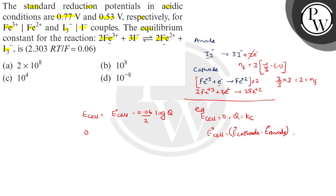So this is the SRP value. For the cathode Fe³⁺ reaction, it's 0.77 minus the anode value which is 0.53. This gives 0.24 volts.